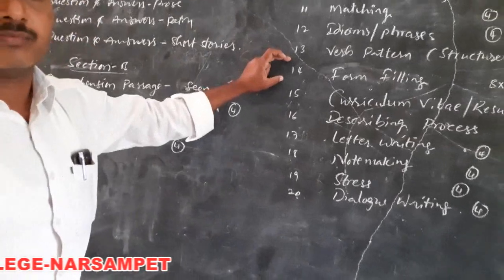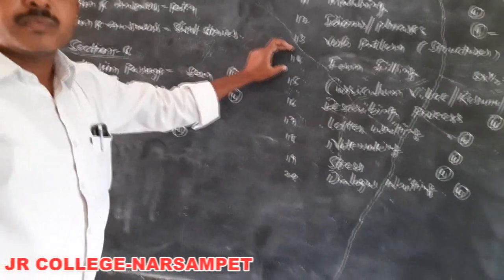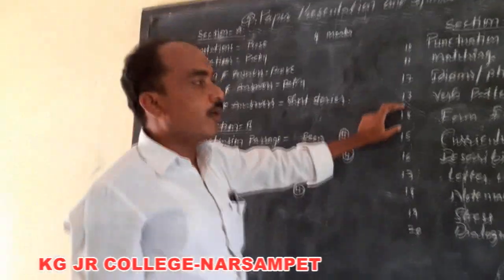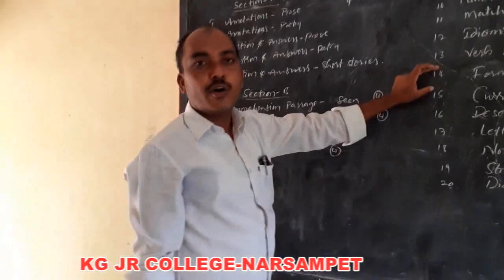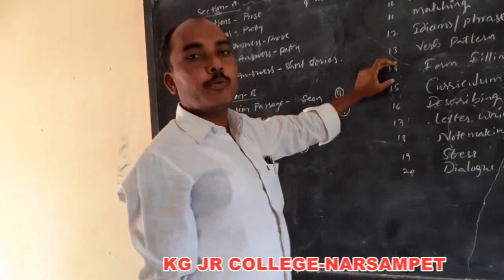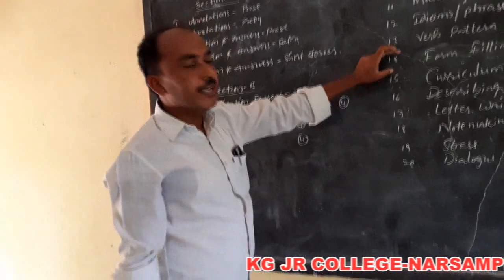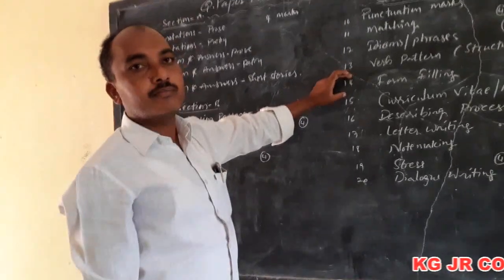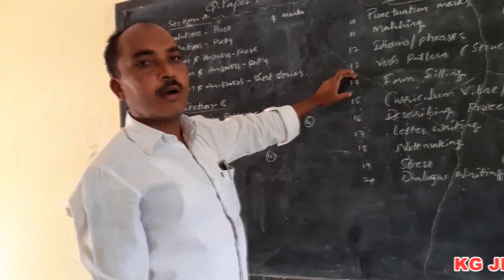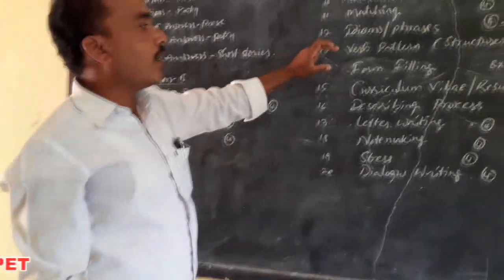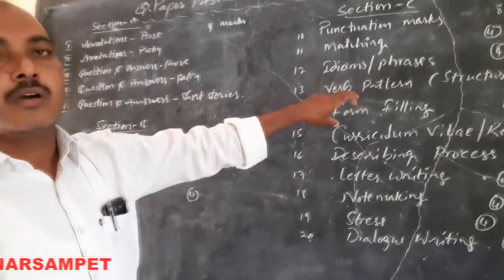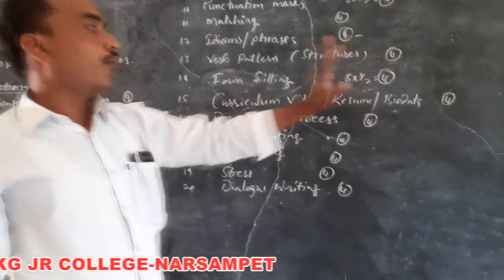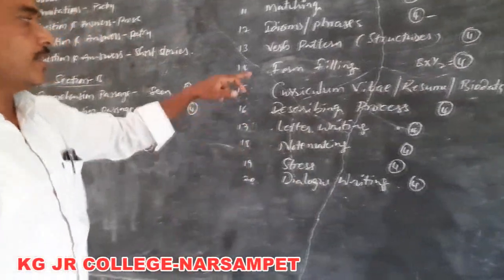The next one is forms. These forms are of different types: bank account opening form, deposit form, withdrawal form, DD form, post office account opening form, withdrawal form, DD form, bus pass form, and admission form for college or school. These forms carry four marks and it is very easy to get 4 out of 4.